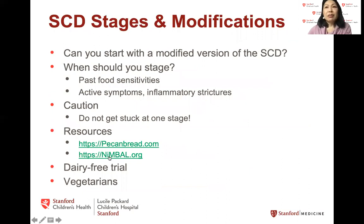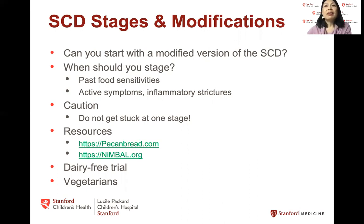We get asked a lot about stages and modifications. Can you start with a modified version of the SCD? There is good evidence that the modified version of the SCD, which we derived for a study called PRODUCE — which includes the SCD but also allows rice, sweet potatoes, oatmeal, maple syrup, and cacao — might be just as effective in managing IBD as the stricter version, but the verdict is still out for now. When we recommend SCD, we still stick to the strict version for the first one to three months until we can determine response, and then we modify when absolutely needed to keep the child on board and going.